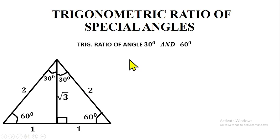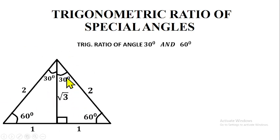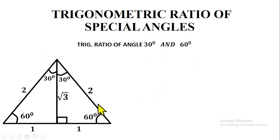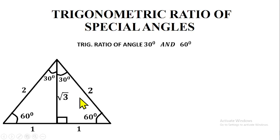Look at this diagram — you don't need to prove it, but understanding how it is generated helps you remember it. From this diagram you can derive the trigonometric ratios of 30° and 60°. This diagram is an equilateral triangle where all sides are equal — each side is 2. In an equilateral triangle, all sides are equal and all angles are equal at 60 degrees each.